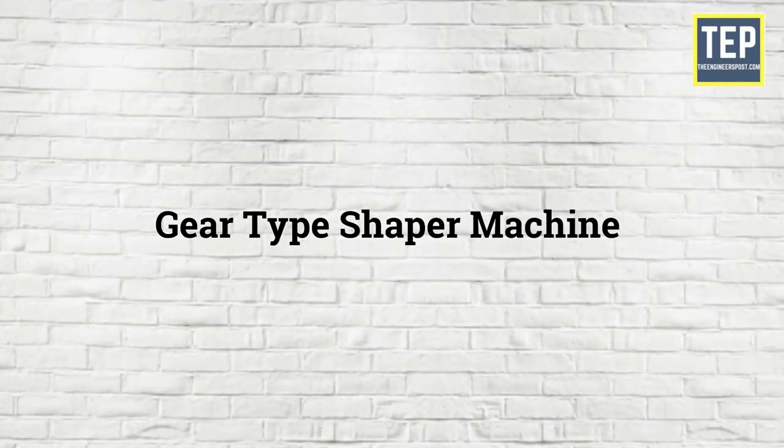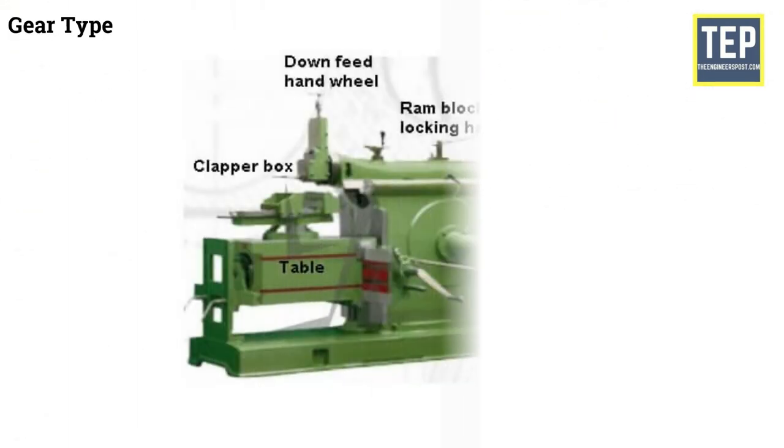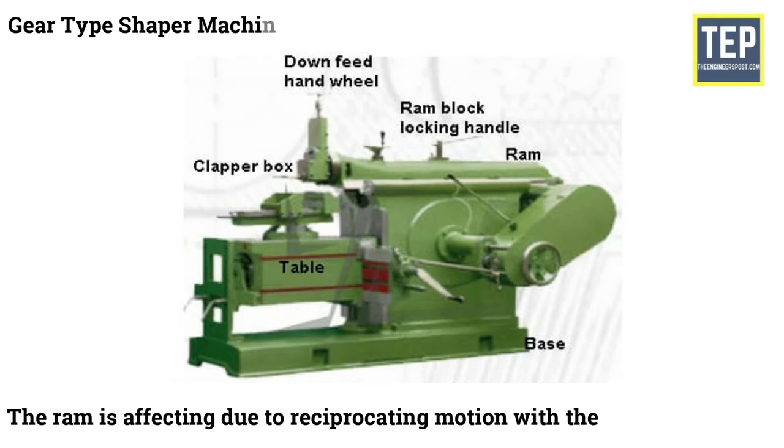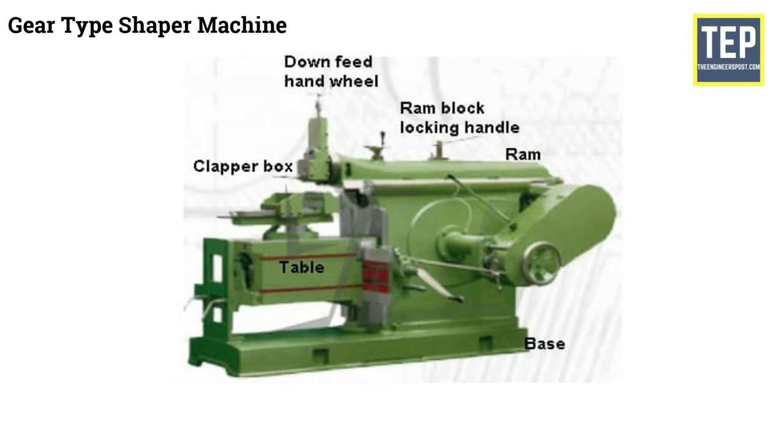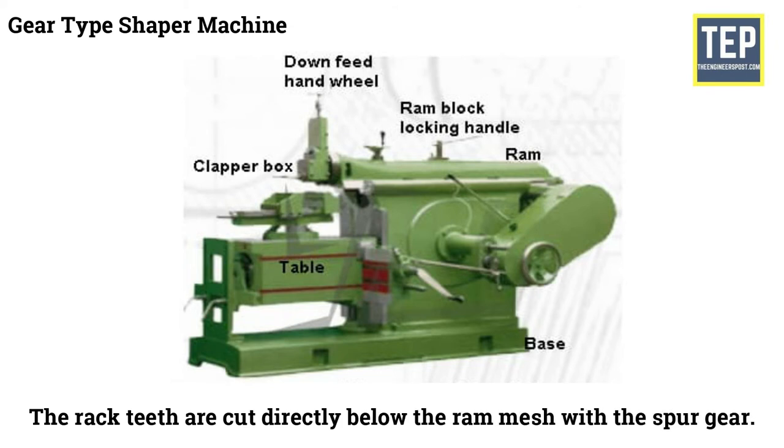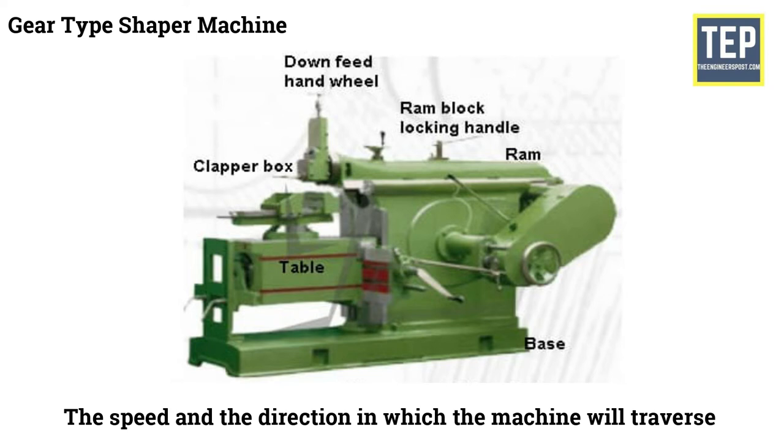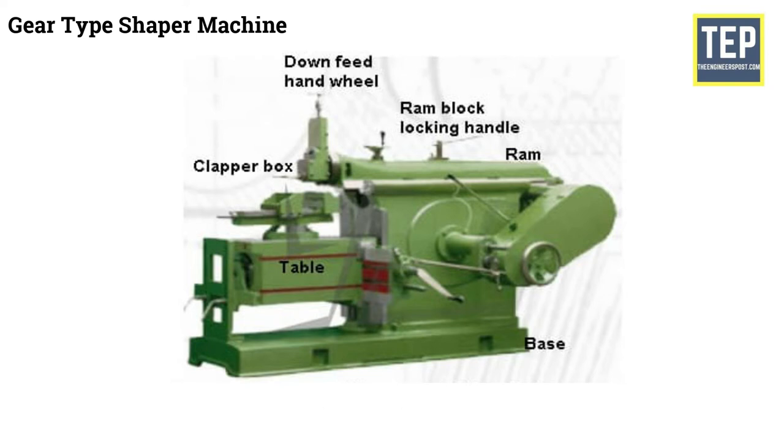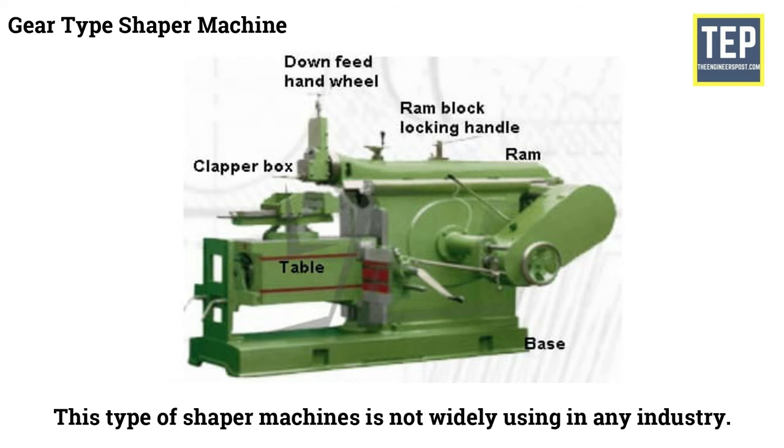Gear type Shaper Machine: In these types of Shaper Machines the RAM is affecting due to reciprocating motion with the rack and pinion. The rack teeth are cut directly below the RAM mesh with the spur gear. The speed and the direction in which the machine will traverse depend on the number of gears in the gear train. This type of Shaper Machines is not widely using in any industry.